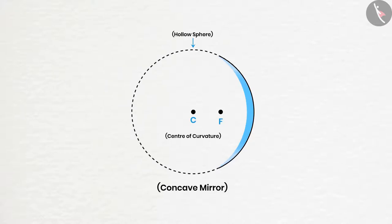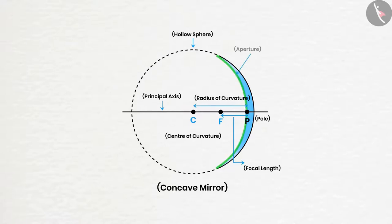If a line is drawn from the center of curvature and focus to the mirror, it will always pass through the center point of the mirror, which is known as pole. This line is called the principal axis. And the distance from the center of curvature to the pole is called radius of curvature. The distance between the focus and the pole is known as focal length. And the circular distance is called aperture.